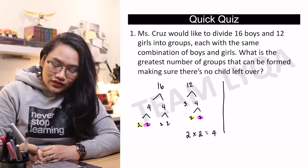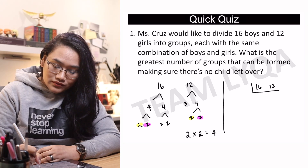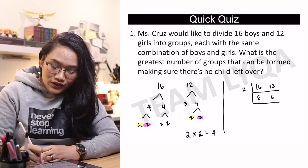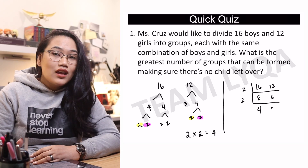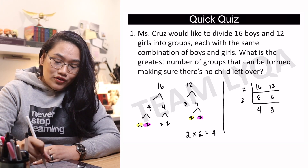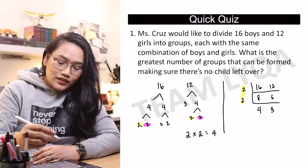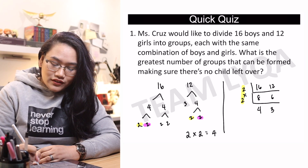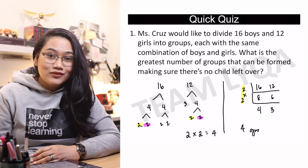Kung ladder method, 16 and 12. Pareho silang divisible sa 2 — 8 and 6. Pareho pa rin even, so pwede uli sa 2. We have 4 and 3. Wala nang pareho, so I'll just multiply this left side: 2 times 2 is still 4 groups. Yun yung tamang sagot.